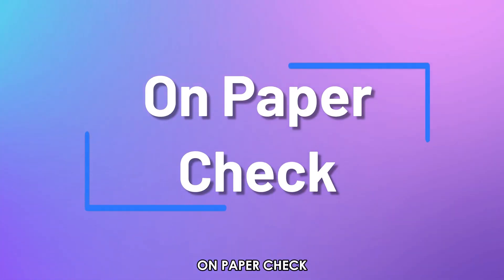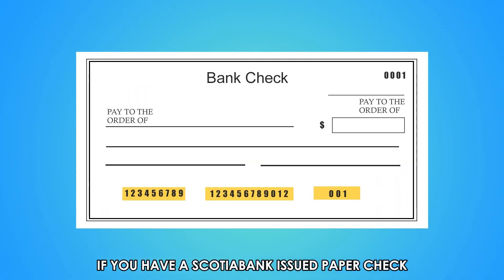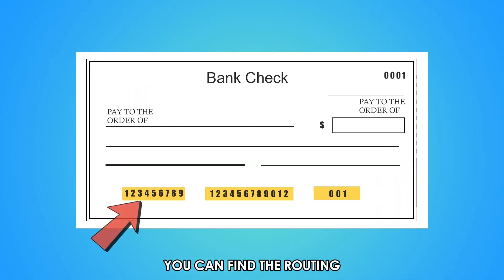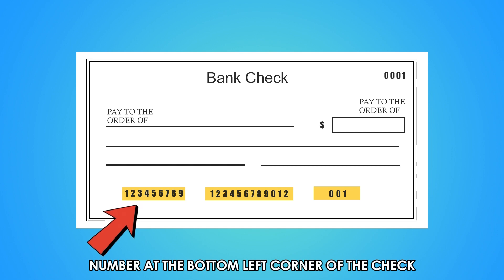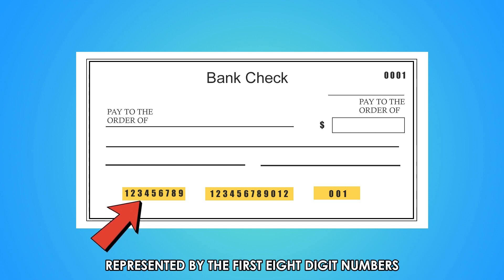On a paper check: if you have a Scotiabank-issued paper check, you can find the routing number at the bottom left corner of the check, represented by the first eight-digit numbers.